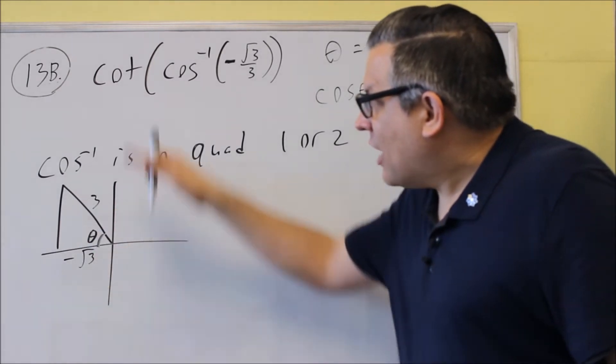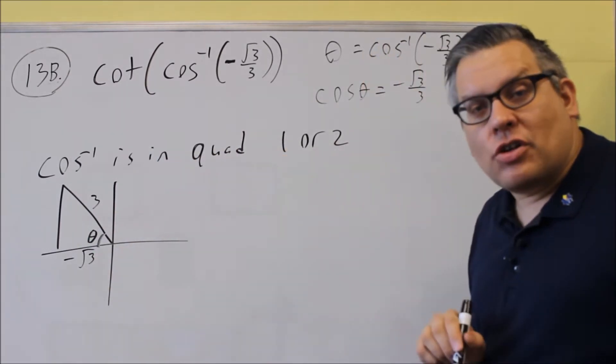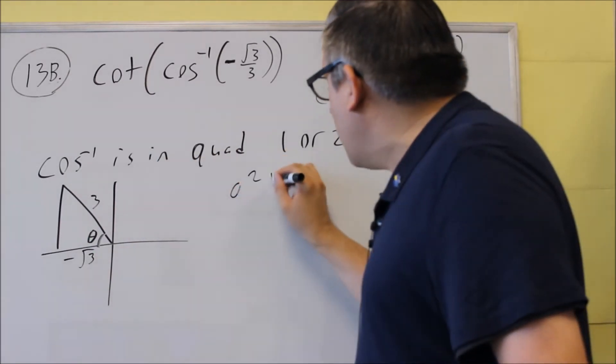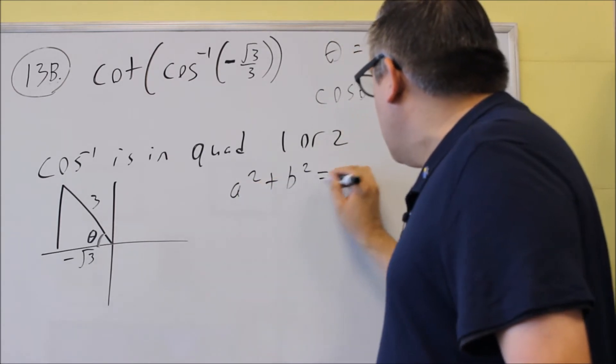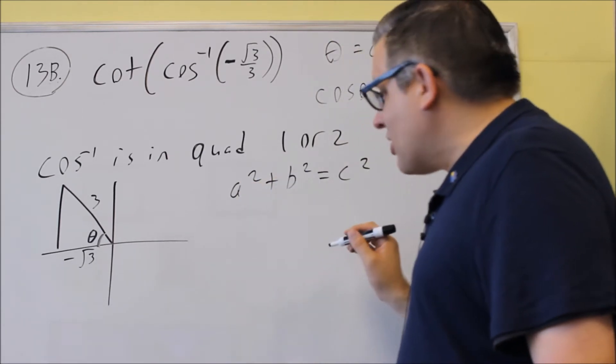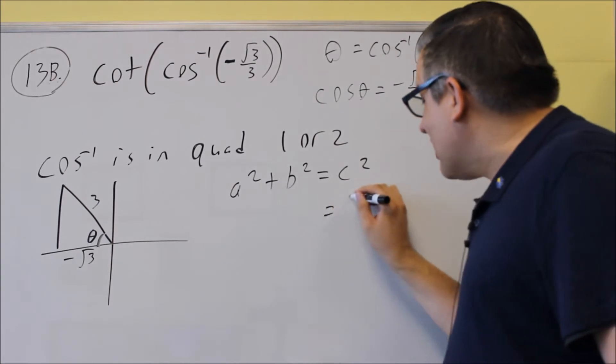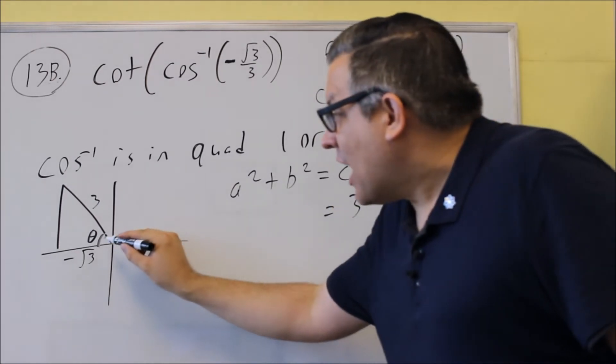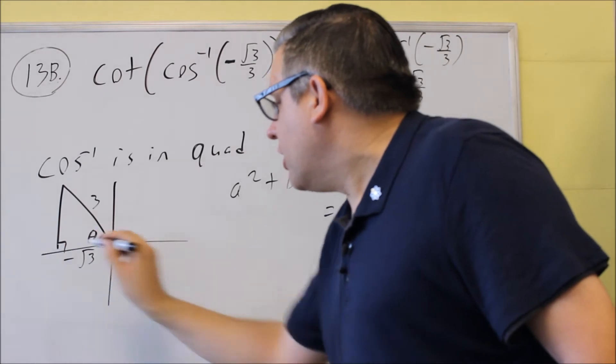We have to find the missing side since cotangent involves an opposite and adjacent side. So, we're going to do a squared plus b squared equals c squared. Now, this time, the c is given as 3 since that's the side opposite the right angle, which would be here.